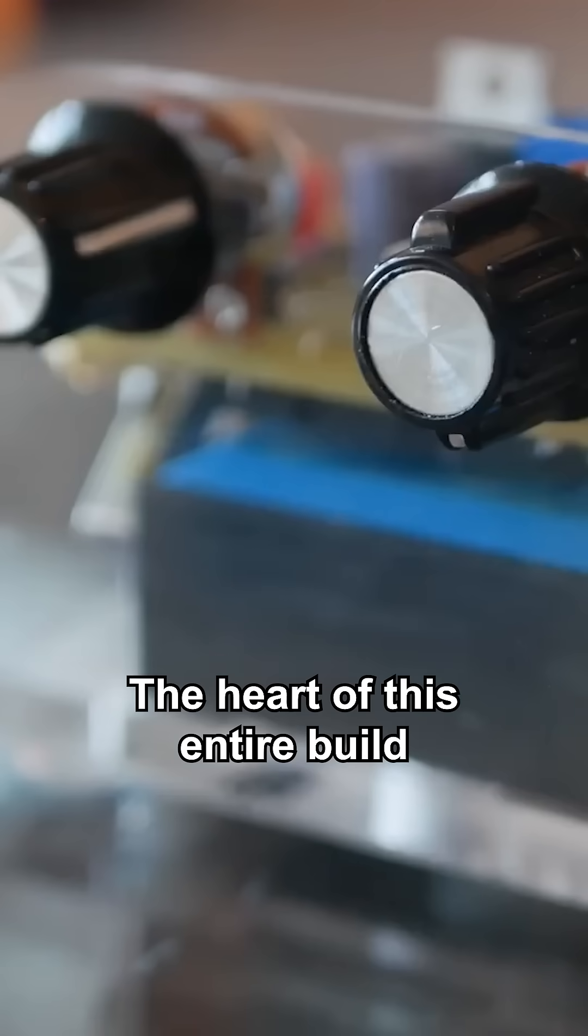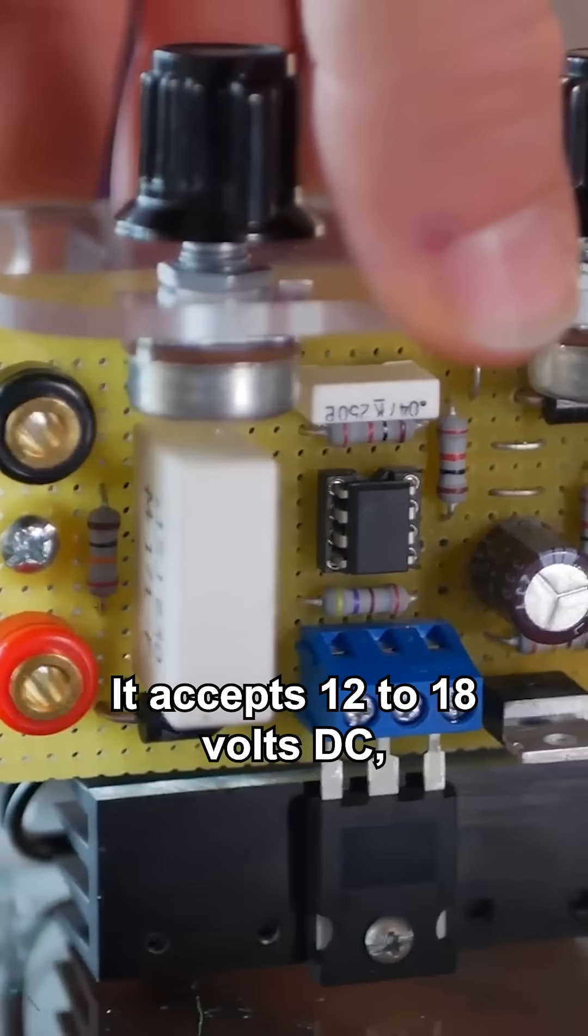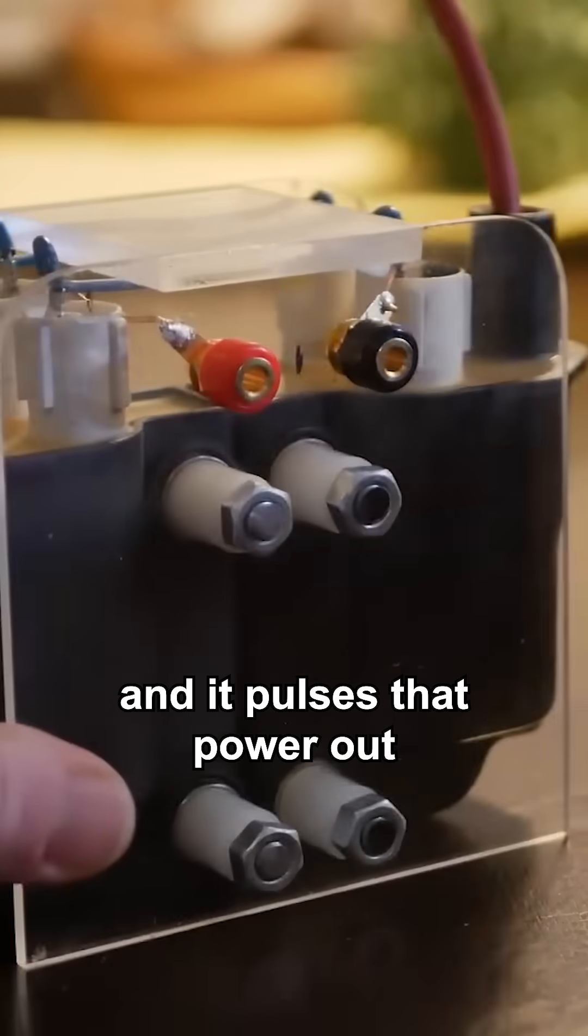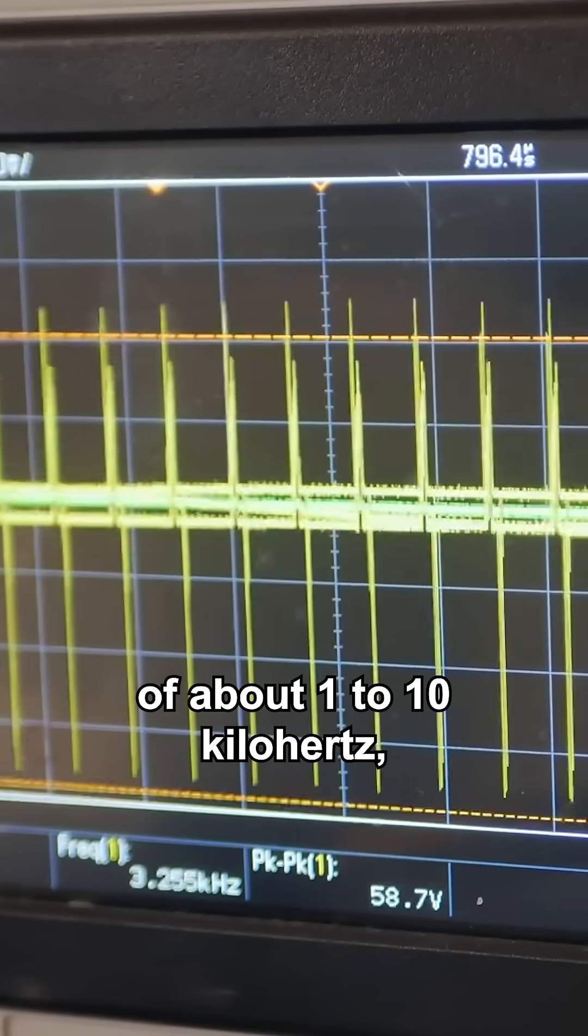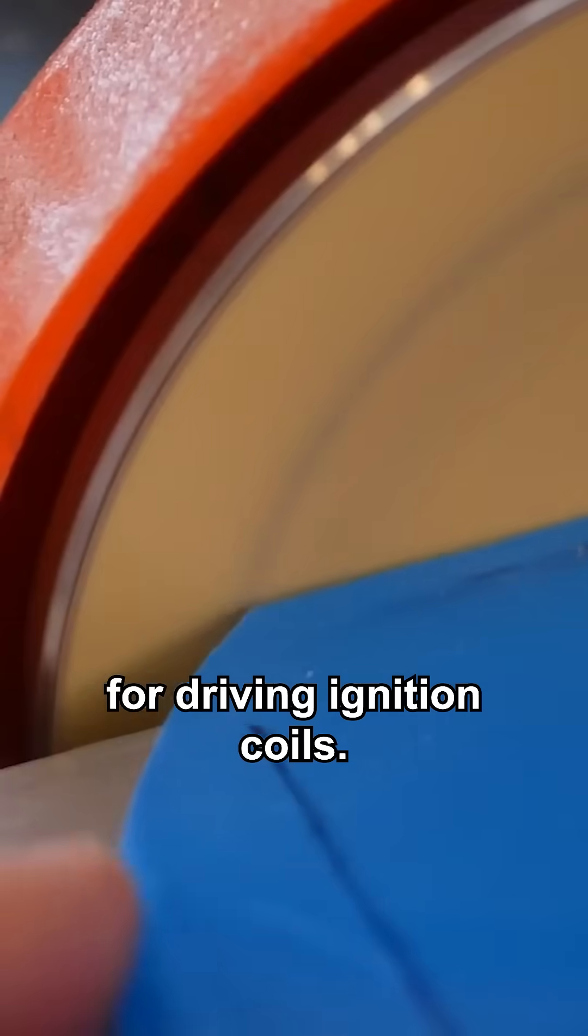The heart of this entire build is this 555 driver circuit. It accepts 12 to 18 volts DC and it pulses that power out to ignition coils in a square wave format at a frequency of about 1 to 10 kilohertz, which is perfect for driving ignition coils.